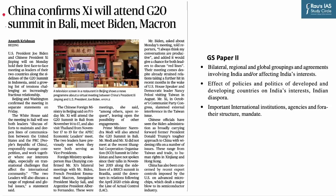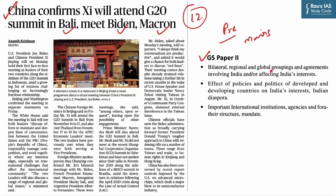Our next discussion is based on news from page 12 of The Hindu: China confirming that President Xi will attend the G20 summit in Bali and will meet Biden and Macron. Important international organizations are a recurring theme in UPSC preliminary and mains examinations. GS Paper 2 mentions bilateral, regional, and global groupings and agreements involving or affecting India's interest, as well as important international institutions, agencies, and their structure and mandate.